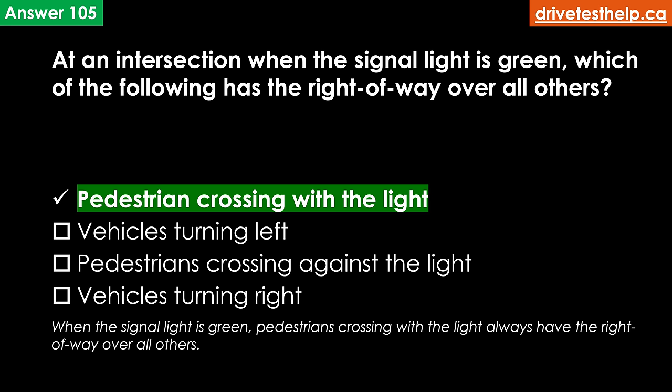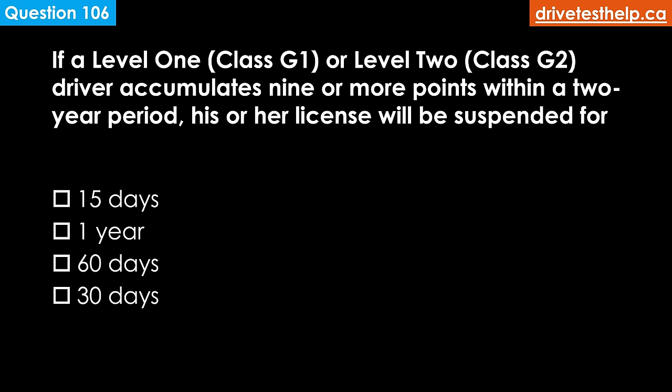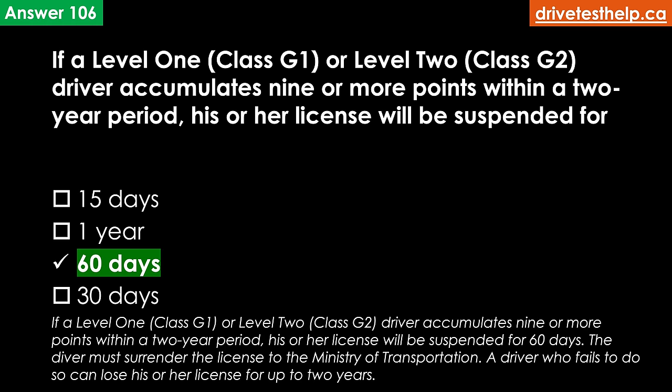If a level 1 class G1 or level 2 class G2 driver accumulates 9 or more points within a 2-year period, his or her license will be suspended for how long? Options: 15 days; 1 year; 60 days; 30 days. The correct answer is 60 days. The driver must surrender the license to the Ministry of Transportation. A driver who fails to do so can lose his or her license for up to 2 years.